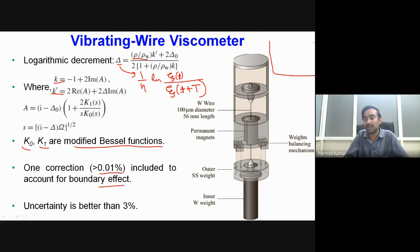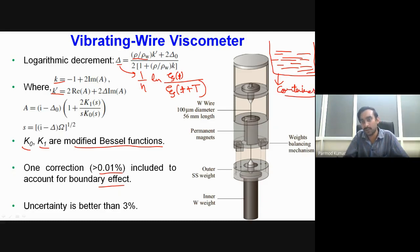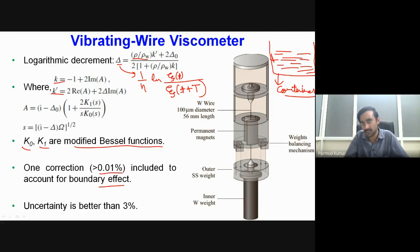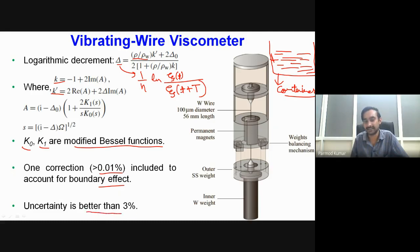A correction greater than 0.01% must be applied to account for boundary effects. While the analysis assumes an infinitely large fluid pool, in practice a cylindrical container is used, and fluid disturbances from oscillations will reach the container wall. Corrections are applied to account for this fluid-wall interaction. For this type of vibrating wire viscometer the uncertainty was less than 3%.